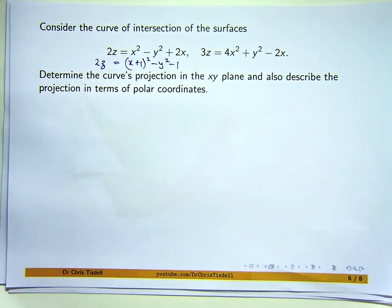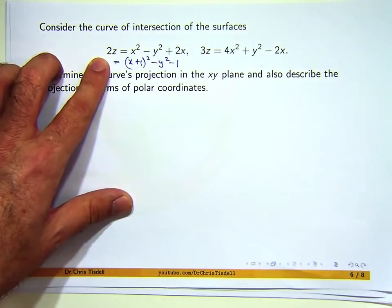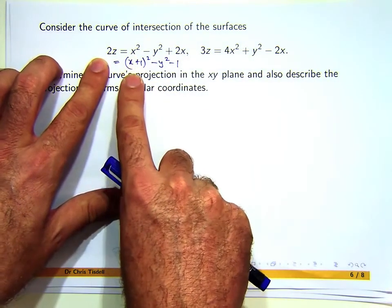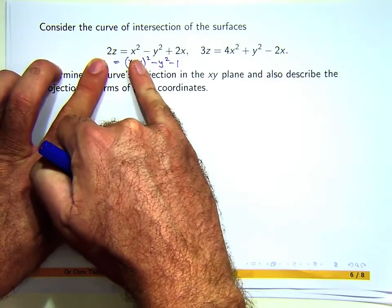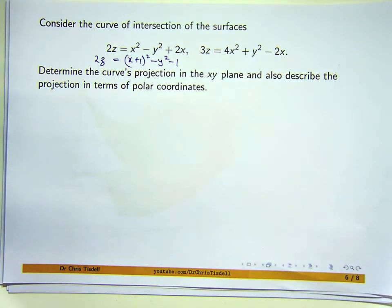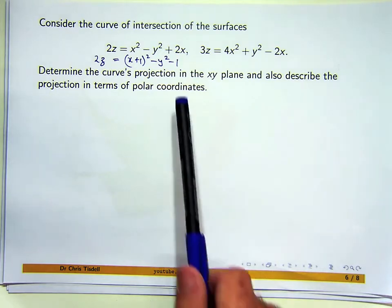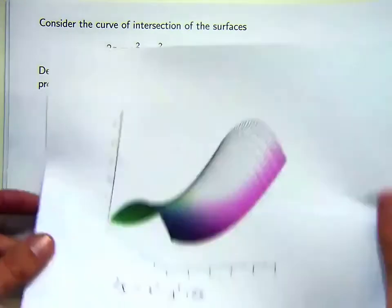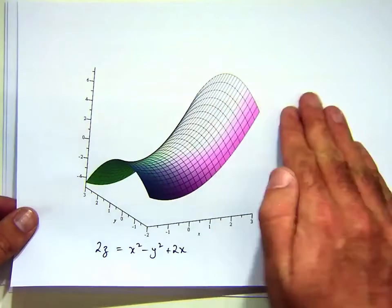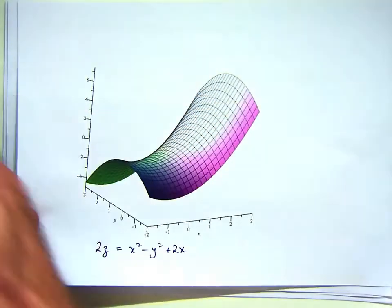If I set z or 2z equal to a constant, say C, what sort of curves am I going to get? Just think of that as x squared or something like that. What sort of curve will I get? x squared minus y squared equals a constant. It will be a hyperbola. The level curves associated with this are hyperbola. If you slice this horizontal to the xy plane, the curves of intersection are going to be hyperbolas.